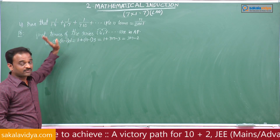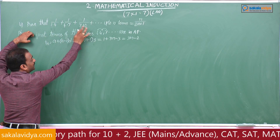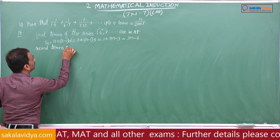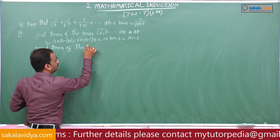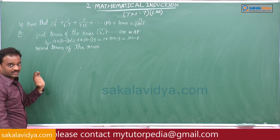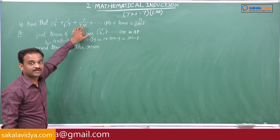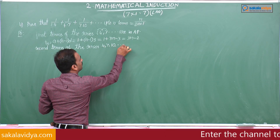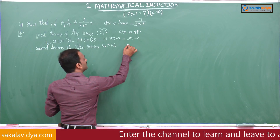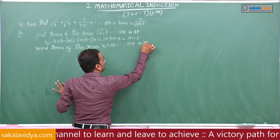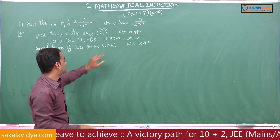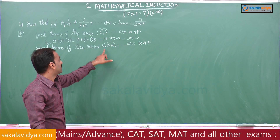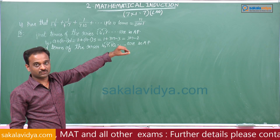Next, the second terms of the given series are 4, 7, 10, and so on. These are again in arithmetic progression with common difference: T2 - T1 = 7 - 4 = 3, T3 - T2 = 10 - 7 = 3. So d = 3.